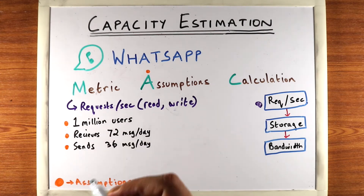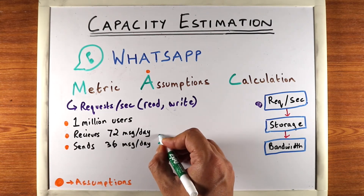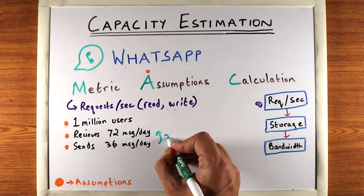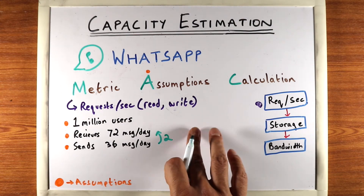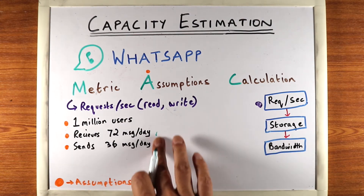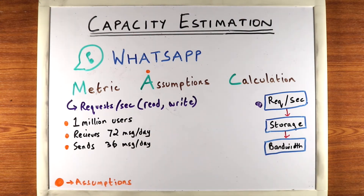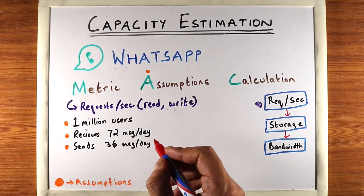Here we picked a receive-to-send ratio of two, which means on average each message goes out to two users, because WhatsApp can have group chats. This ratio could be very different depending on your service. Keeping this in mind, we can figure out how many reads and writes we have.